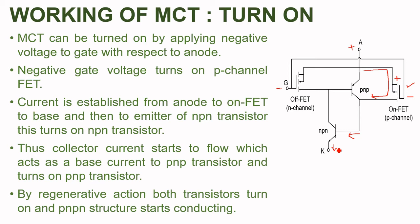Thus, the current will establish emitter current in the NPN transistor. This base-to-emitter current turns ON the NPN transistor and causes the collector current to flow. Now, this collector current acts as the base current for the PNP transistor. If base current is applied to the PNP transistor, then the PNP transistor will also turn ON. This regenerative process will continue and both transistors will turn ON, thus the PNPN structure will start conducting.